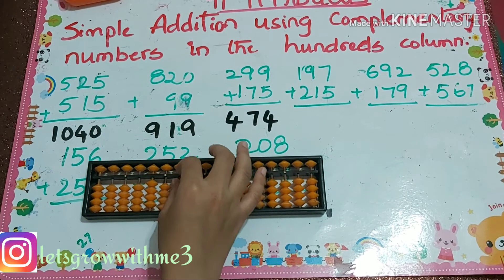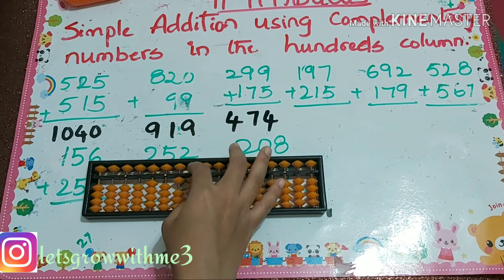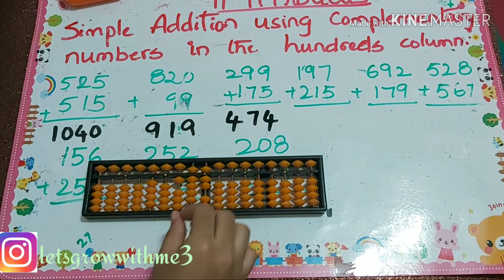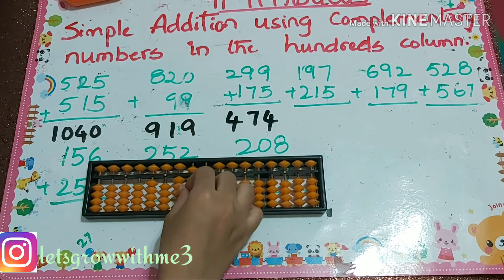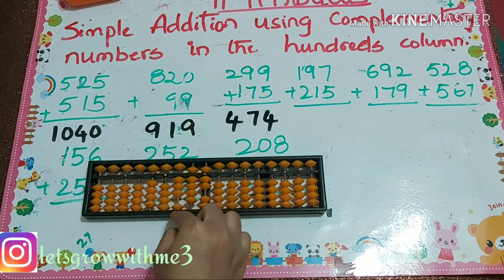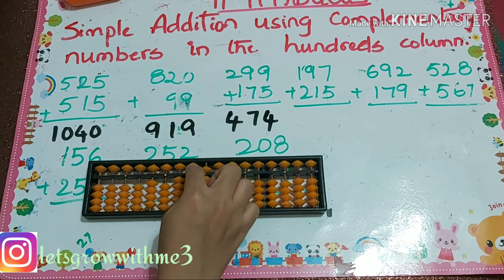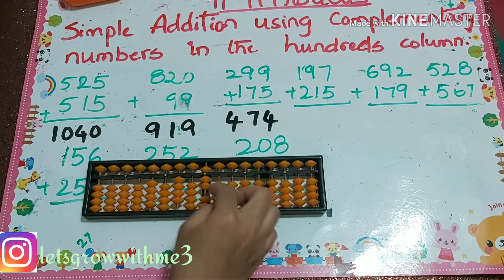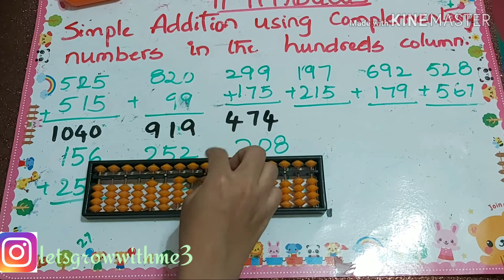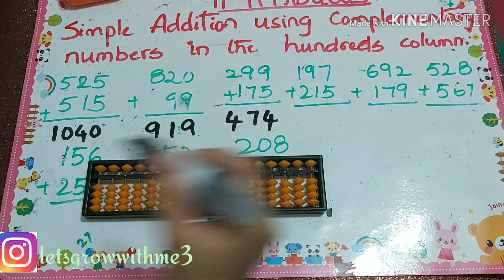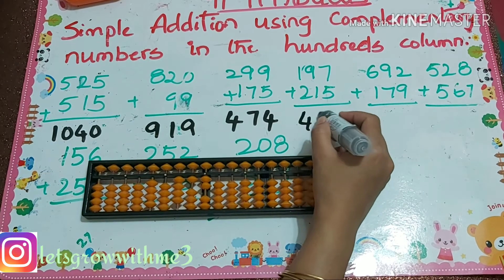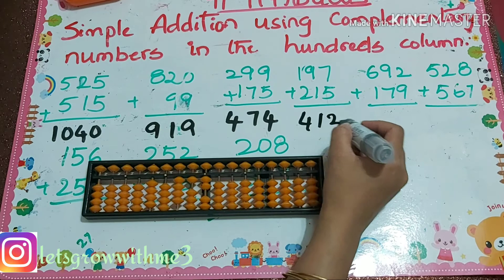Next one: 197 plus 215. How to add 1 here? Plus 10 minus 9. And how to add 5 here? Plus 10 minus 5. So your answer is 412.